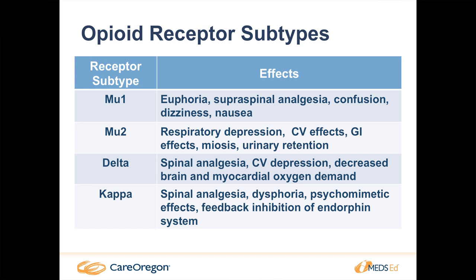Our delta and kappa receptors are less addressed by our drugs. The kappa receptor is associated with dysphoria — when that's activated, that's what causes the patient to feel down. Newer drugs are trying to address: if I hit this receptor but not that one, can I have a wonder drug that helps with pain but doesn't cause these bad side effects? We're really not quite there yet.